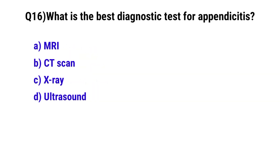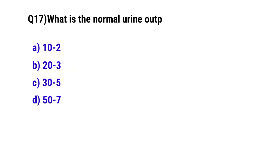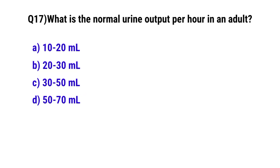Question number 16: What is the best diagnostic test for appendicitis? The correct option is B: CT scan. Question number 17: What is the normal urine output per hour in an adult? The correct option is C: 30 to 50 ml.